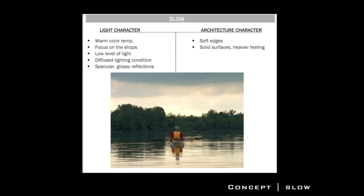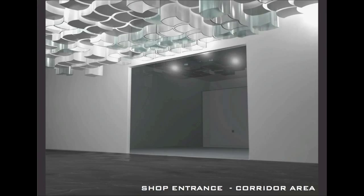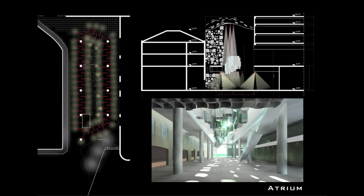We have described two types of water speed: fast and slow. Different lighting conditions correspond to different speeds of the water, and the morphology and volumes in the building tell us if it's slow or fast. That's how we decide what kind of light we need in the area.